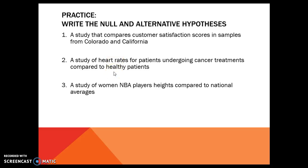For study two, our two groups are cancer patients and healthy patients. The null hypothesis is there is no difference between cancer and healthy patients; the alternative is that there is a difference. Nowhere does it say 'more,' 'less,' 'higher,' or 'lower' — we just want to know are they different or not. For study three, NBA players compared to national averages: the null is there are no differences between NBA players and women in the US. The alternative — we have a strong argument that NBA players are taller than the average woman in the US.